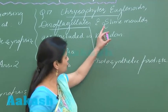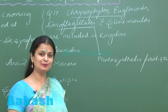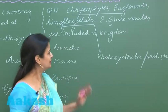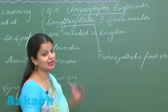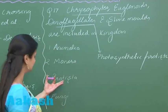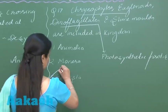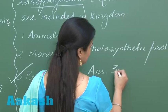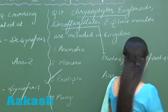And if we talk about slime molds, slime molds are saprophytic protists. So all these groups are included under the kingdom Protista. It means the right answer here is option number 3. So let's move on to the next question.